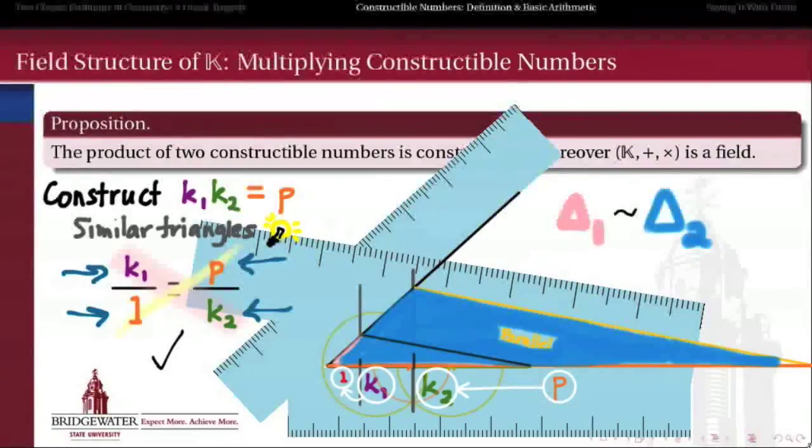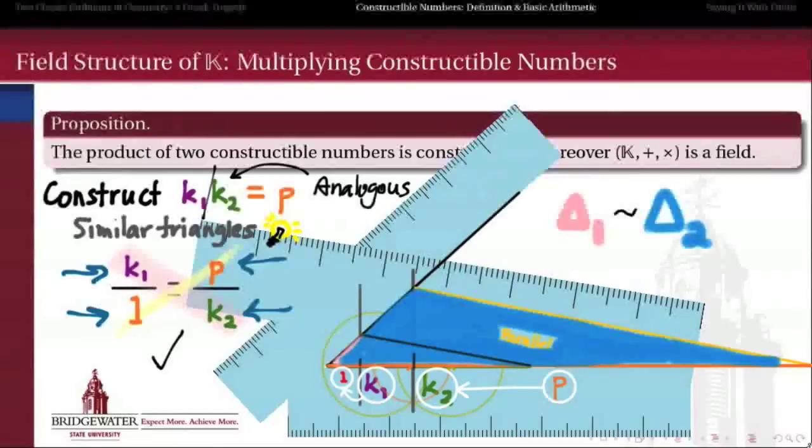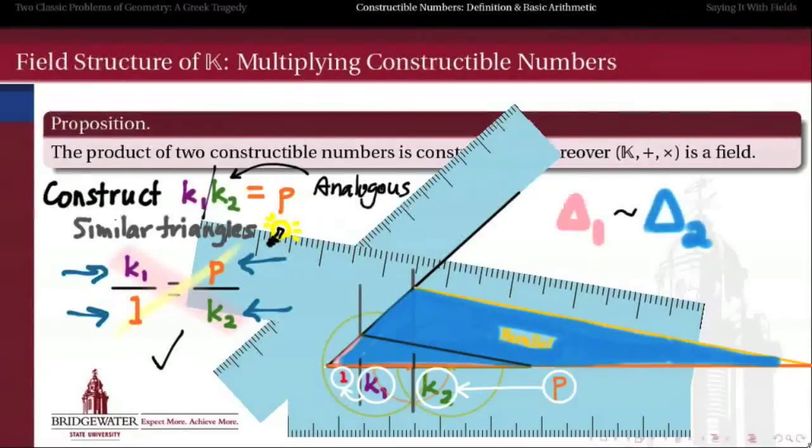That probably went by pretty quickly, but it's really an elegant construction, and a completely analogous construction shows how in addition to constructing the product of k1 and k2, we can also construct the quotient of k1 and k2. And as long as k2 is not equal to zero, the fact that we can do this demonstrates that constructible numbers form a division ring. In other words, we can divide by everything except for zero. That, combined with the fact that multiplication of complex numbers is commutative, shows that the constructible numbers, in fact, form a field. We can add, we can subtract, we can multiply, we can divide, and all the addition and multiplication operations are commutative. We can divide by everything except zero.